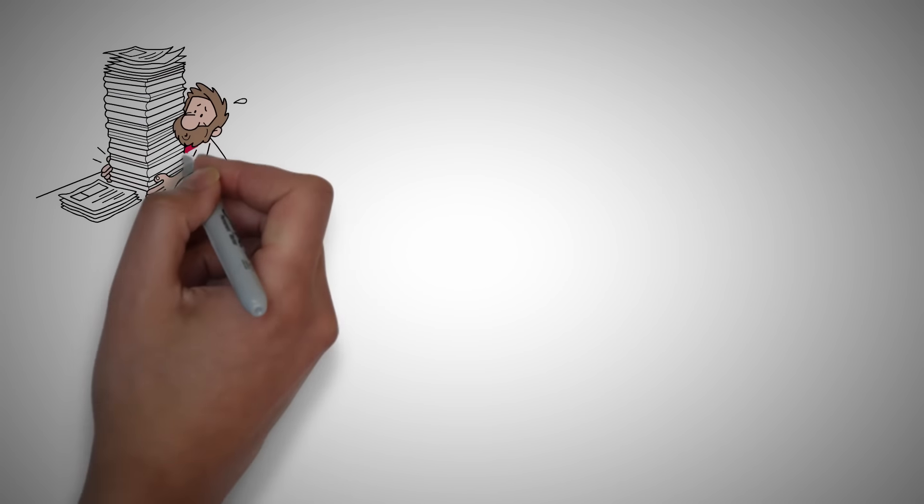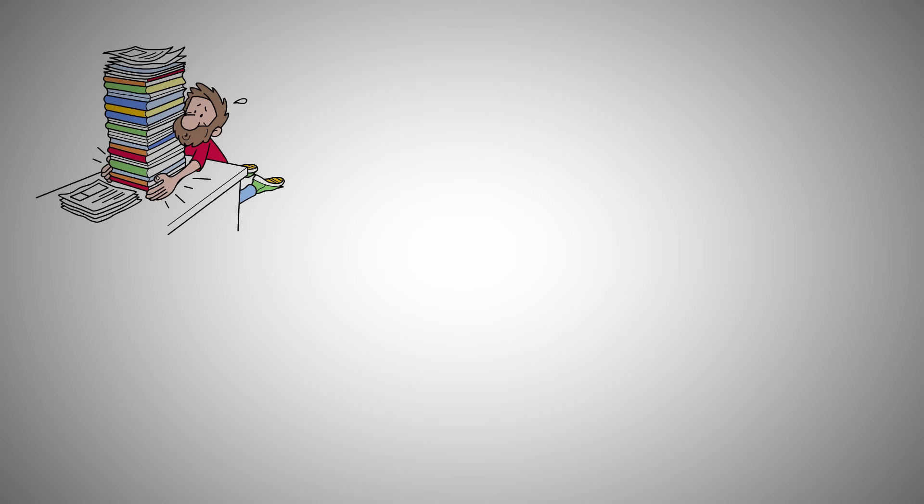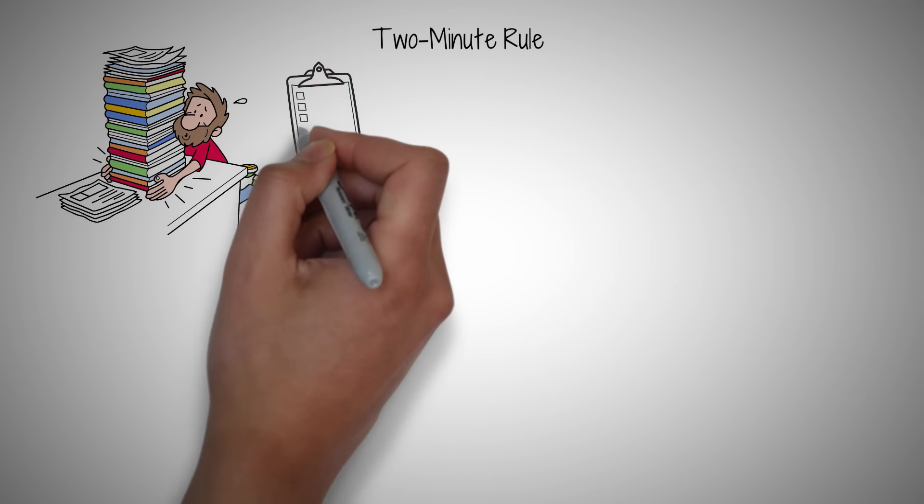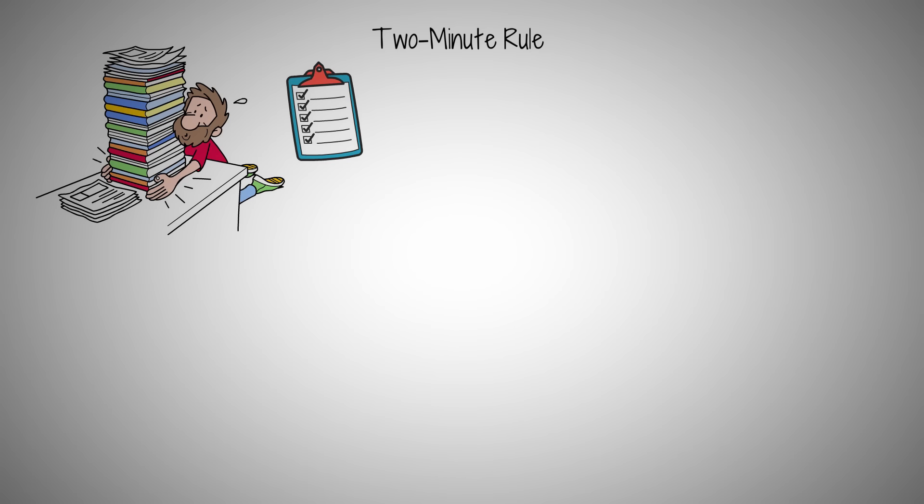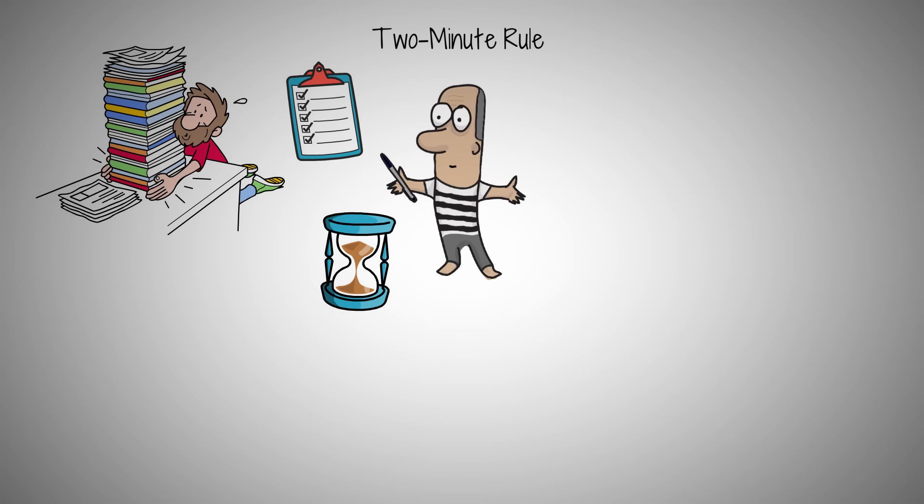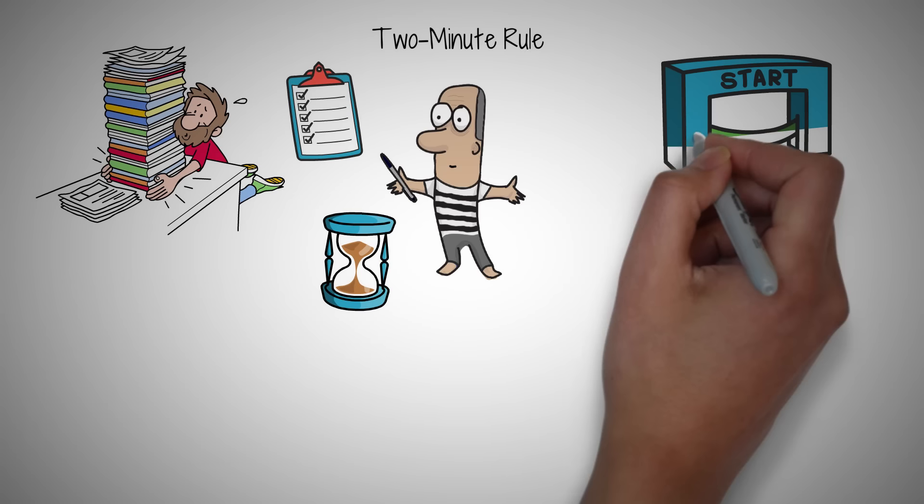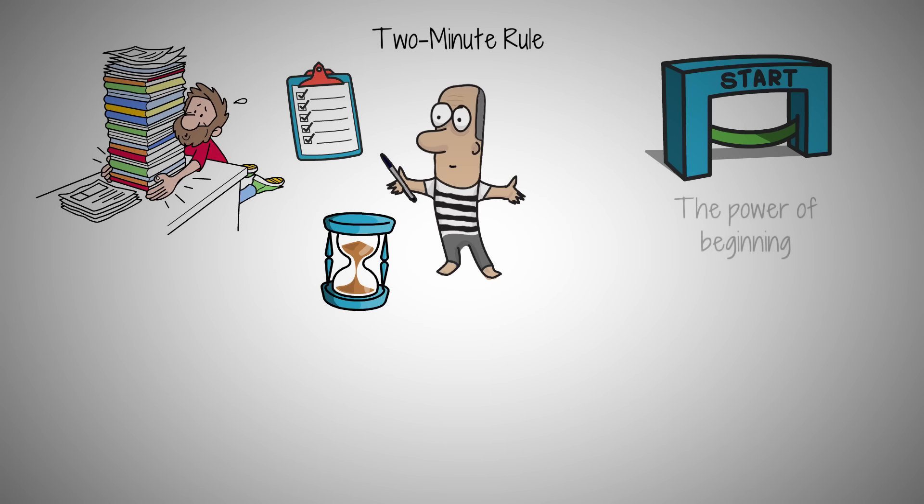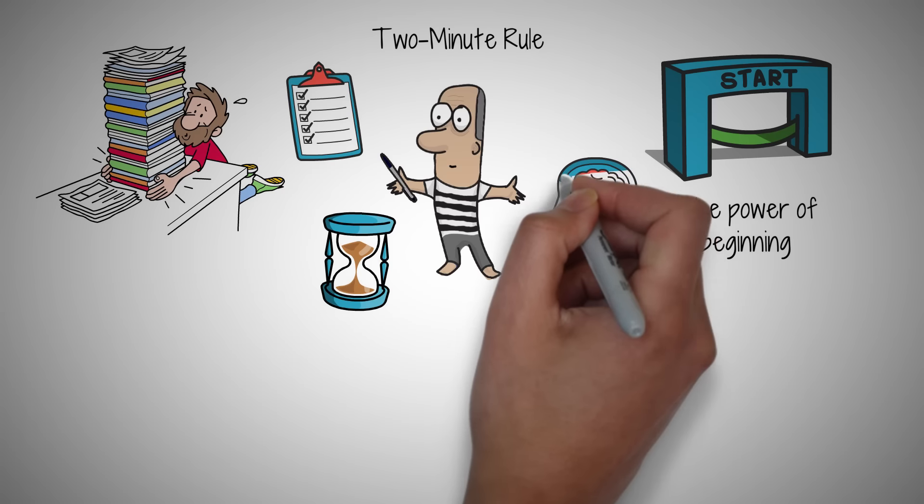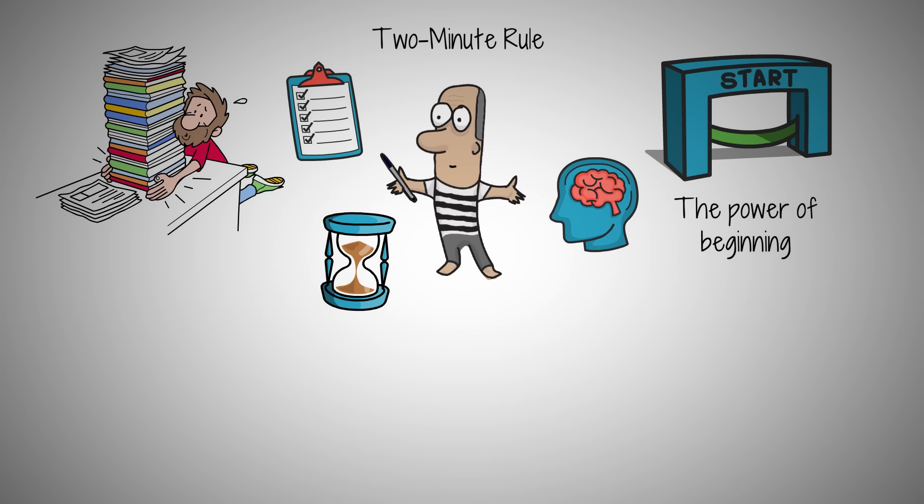Ever felt overwhelmed by a mountain of tasks? Ending up procrastinating even the smallest ones? The key to breaking this cycle is called the 2-Minute Rule, a strategy that can transform the way you tackle your to-do list. Consider the famous artist Pablo Picasso, who could sketch a masterpiece in minutes. Picasso's ability to start and complete a piece swiftly illustrates the essence of the 2-Minute Rule, the power of beginning. If Picasso waited for the perfect moment, those iconic sketches might never have existed.